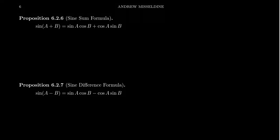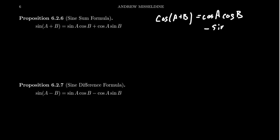In our previous video, we talked about the angle sum and angle difference formulas for cosine. As a reminder, cosine of a plus b equals cosine of a times cosine of b minus sine of a times sine of b. Because remember, cosine is a jerk — it loves the cosines and hates the sines.